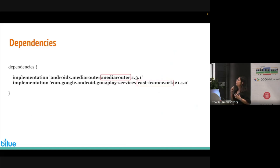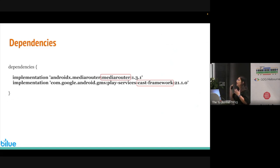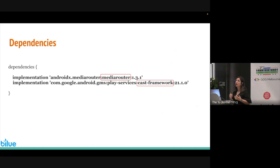For using the Cast SDK and adding casting to our Android app, we need to add some libraries to our Gradle file. The first one is Media Router, which provides the cast button and helps us find and discover cast devices. The next one is Cast Framework, which helps with all the session management and all the UI components required by the design checklist.